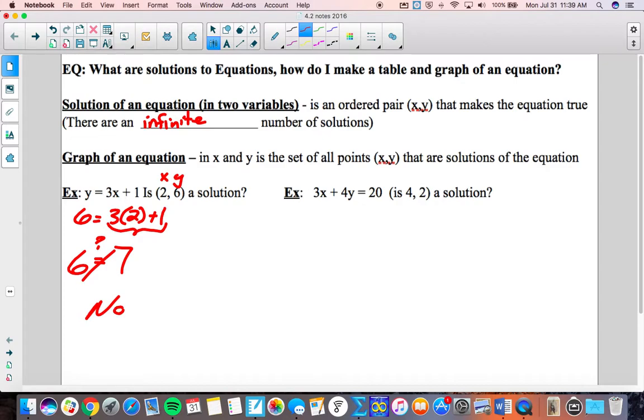So no, (2,6) is not a solution. It would not show up on our table and it would not be on the line of the graph of this.